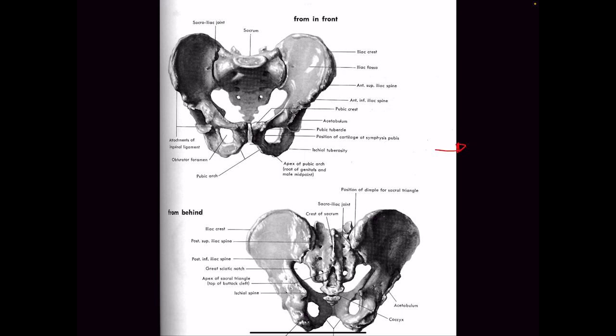The male pelvis tends to be a little bit heavier. We have those three major bones: the propellers on both sides, the iliac crest on either side being the major landmark, and then the sacrum from behind — this crazy-looking bone that sits right there.